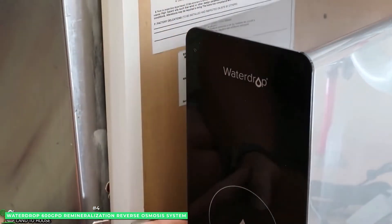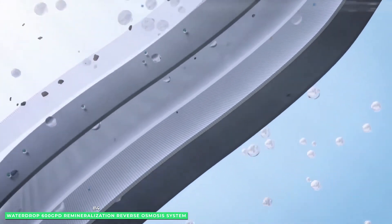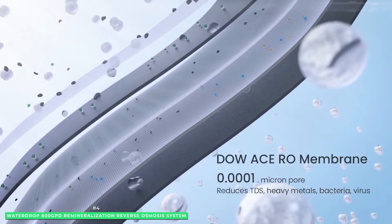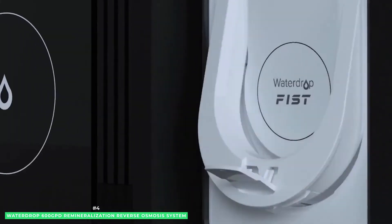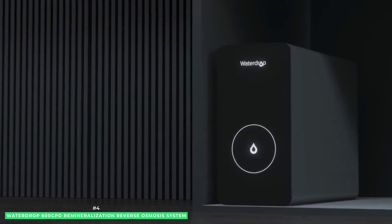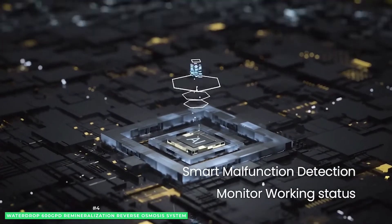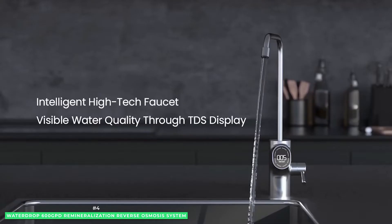Waterdrop tankless RO systems use a combination of PP cotton, activated carbon, micron filtration, RO membrane, post-activated carbon, and non-woven fabric filters. As these filters work in concert to reduce harmful chemicals and substances, they leave behind the natural minerals that make your home's water taste especially good and refreshing.